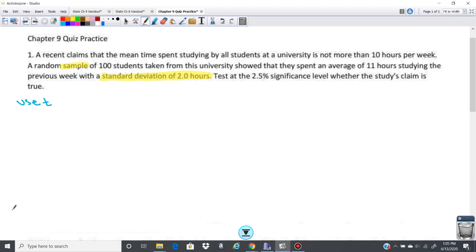Our test is to test whether the claim is true. Let's see what the claim is. That's going to be your null hypothesis. So the null hypothesis is that the mean time spent studying is not more than 10 hours per week, which means the mean is less than or equal to 10 hours per week, which means the alternative is exactly the opposite. So the alternative hypothesis is that the mean is greater than 10 hours per week.